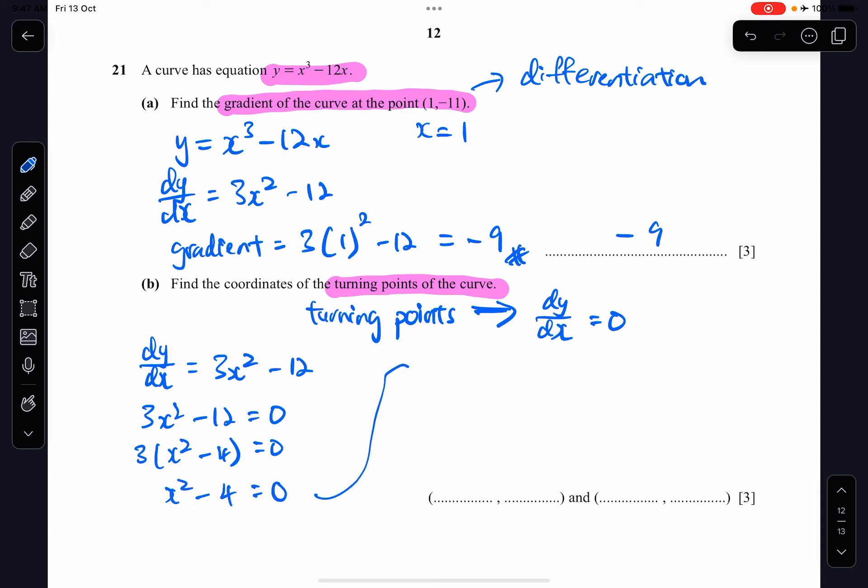So I have x squared minus 4 equals to 0. So let me continue here. So x squared minus 4 equals to 0. I can factorize this to x minus 2, x plus 2 equals to 0. So my value of x is either equals to 2 or negative 2.